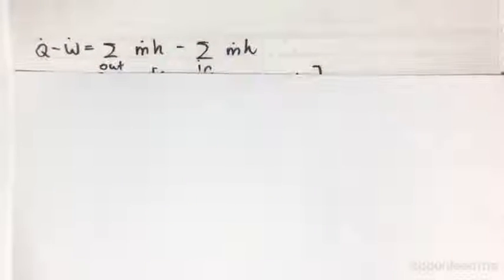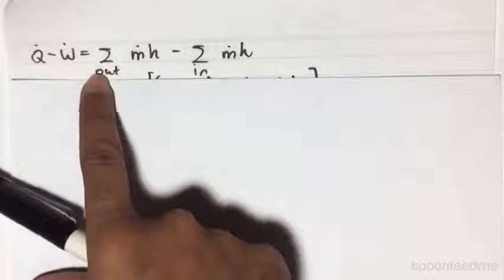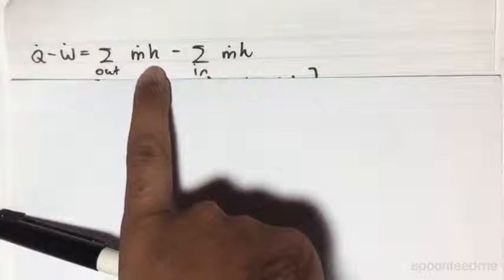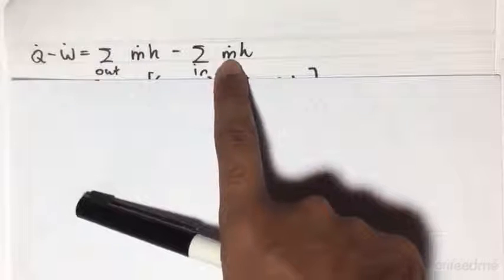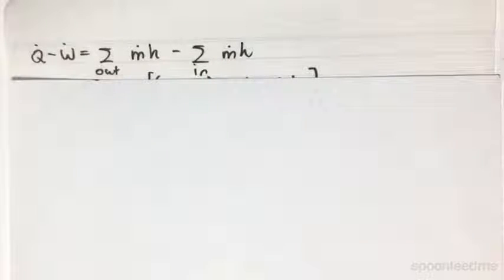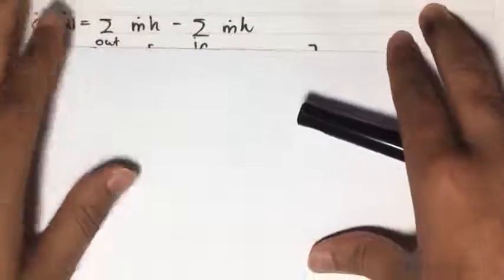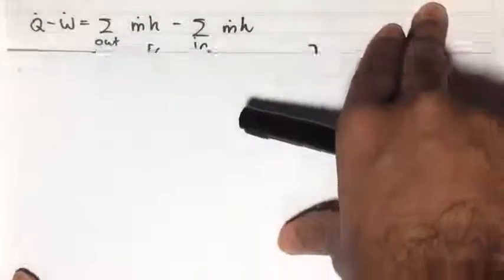So if we do a quick open system first law analysis of this open feed water heater, we have q minus w equals the sum out of the mass flow rates times by the enthalpy, minus the sum of the flow rates in times by their enthalpies. We are neglecting kinetic energy and potential energy, just like in the other cases, because they will not be changing at all.